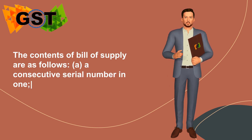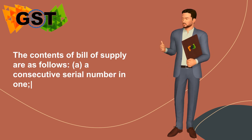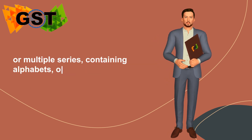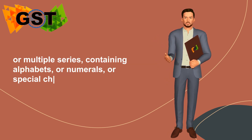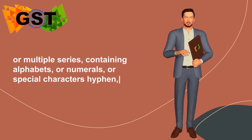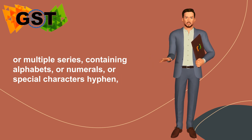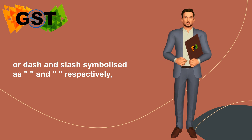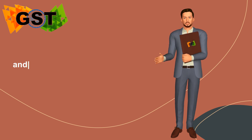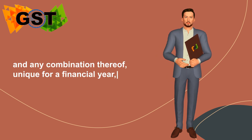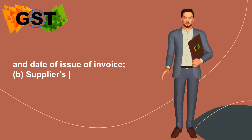a. A consecutive serial number in one or multiple series, containing alphabets or numerals or special characters — hyphen or dash and slash (symbolized as - and / respectively) — and any combination thereof, unique for a financial year, and date of issue of invoice.